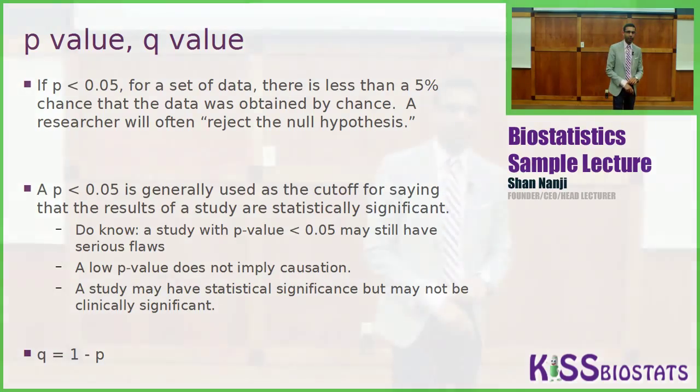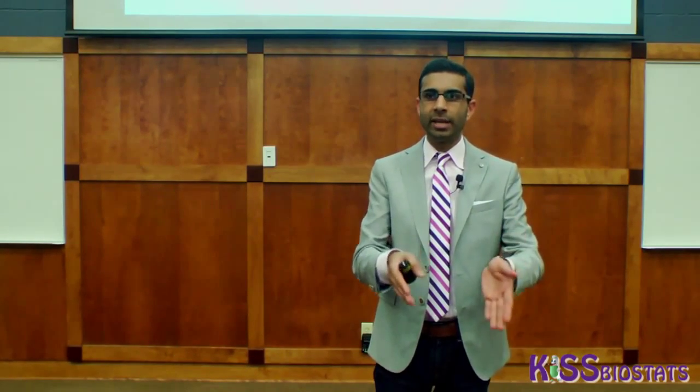Q equals one minus p. For example, a new blood pressure lowering medication that can lower blood pressure from 130/80 to 129/80 with a p-value less than 0.0001 — you would still not use the new drug, since the result is not important enough given the small amount of change it creates, not to mention the cost and possible side effects. So it's statistically significant but not clinically significant.